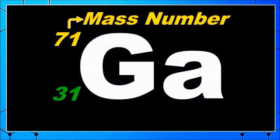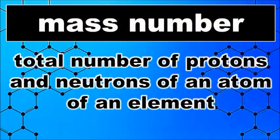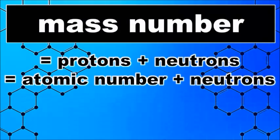Now, the gallium atom can be written as follows. This means that 71 is the mass number. The mass number is the total number of protons and neutrons of an atom of an element. Therefore, it is also equal to the atomic number plus the number of neutrons of an atom.